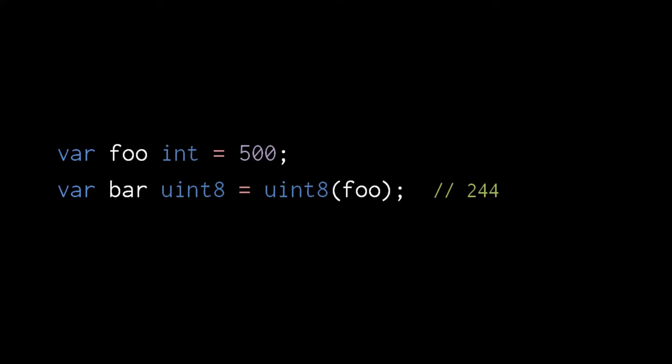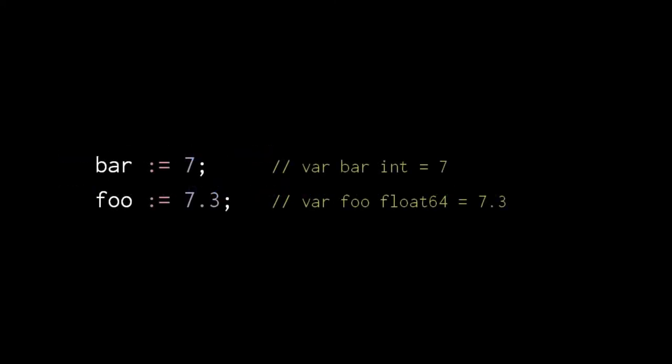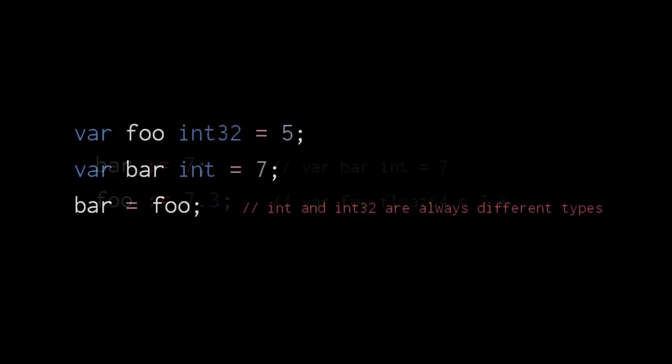Here, converting the int value 500 to uint8 produces the value 244 by truncating the int down to its least significant 8 bits. When declaring number variables, understand that number literals themselves do not have any particular type and so can be used in assignments to any kind of number. However, when a variable's type is inferred from a number literal, integer literals default to int and floating point literals default to float64. Be clear that int is always a different type than an int32 or int64, even when an int has the same underlying representation. As far as the compiler is concerned, they are different sorts of things.